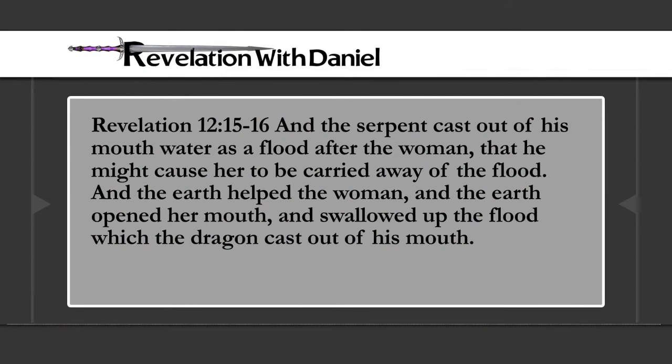Verses 15 and 16 in Revelation chapter 12 say: the serpent cast out of his mouth water as a flood after the woman, that he might cause her to be carried away of the flood, and the earth helped the woman and swallowed up the flood. The dragon and the first beast of Revelation 13 are drawing from the same water. The second beast comes out of the earth, which helped the woman. So chapter 13 is a magnification of what's happening in chapter 12.